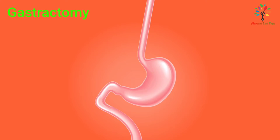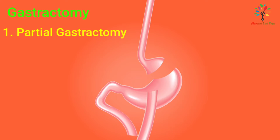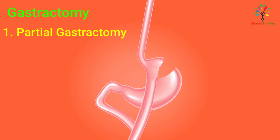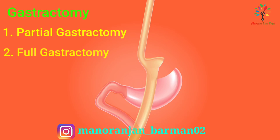Gastrectomy is the removal of a part or all of the stomach. There are three main types of gastrectomy. A partial gastrectomy is the removal of a part of the stomach — the lower half is usually removed. A full gastrectomy is the removal of the entire stomach.